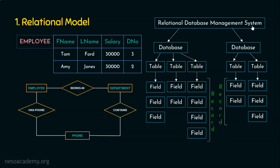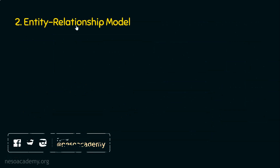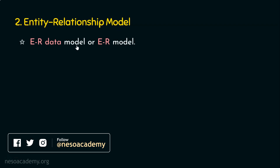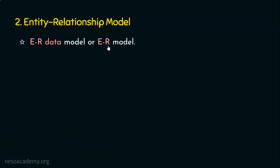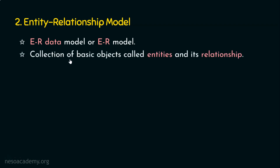Let's now move on to the next data model, the ER model — the entity relationship model. This entity relationship model is also referred to as the ER data model or simply ER model, where E stands for entity and R stands for relationship. The ER model is actually a collection of basic objects, and these objects are referred to as entities. When we have a collection of multiple entities, obviously there will be relationships among them.